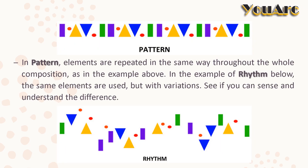In pattern, elements are repeated in the same way throughout the composition, as in the example above. We can see the number of elements present in the pattern repeated in the same way. But in the example of rhythm given below, the same elements are used but with variations. See if you can sense and understand the difference.